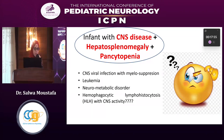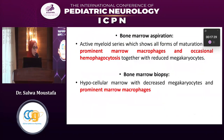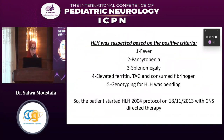The differential diagnosis we considered included viral infection with myelosuppression, leukemia with CNS infiltration, and neurometabolic disorder. Bone marrow aspiration and biopsy were performed, both showing prominent marrow macrophages and occasional hemophagocytosis.